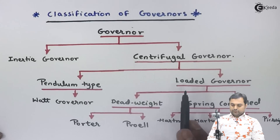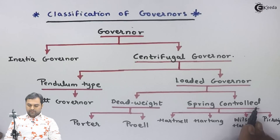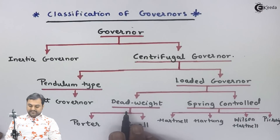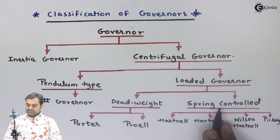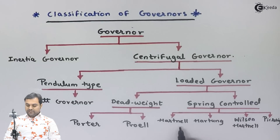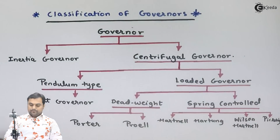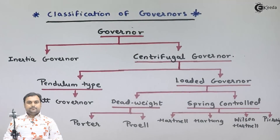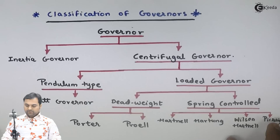In loaded governors, which are also of centrifugal type, we have dead weight governors and spring controlled governors. In dead weight, we have Porter and Proell governors. In spring controlled, we have Hartnell, Hartung, Wilson-Hartnell, and Pickering governors. This was a brief classification of governors — these are the many types of governors we have.